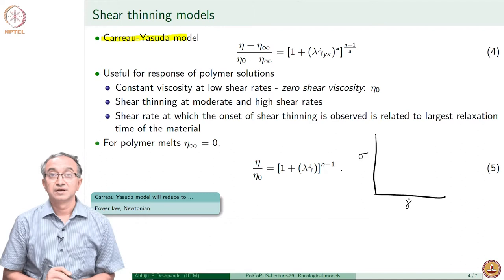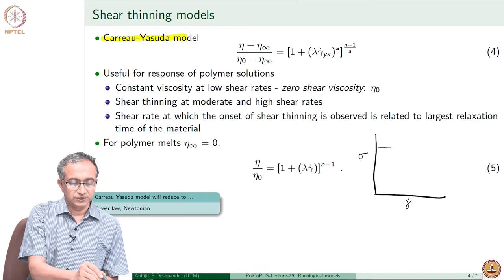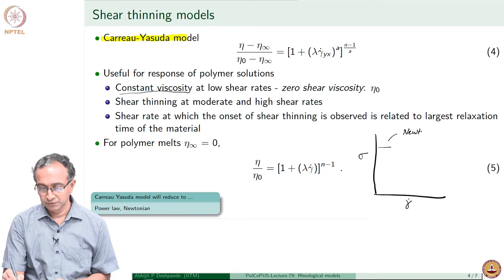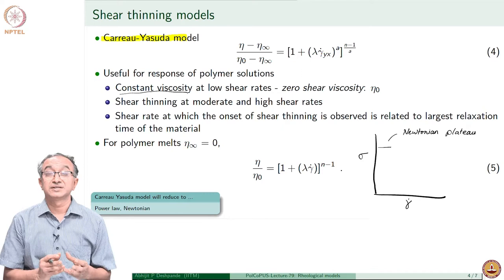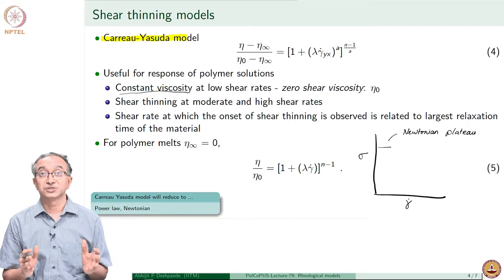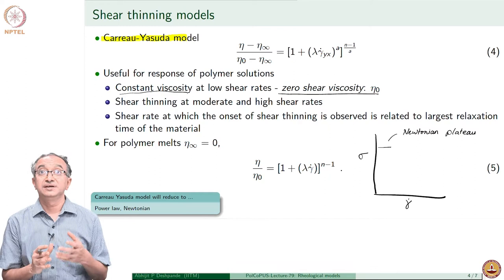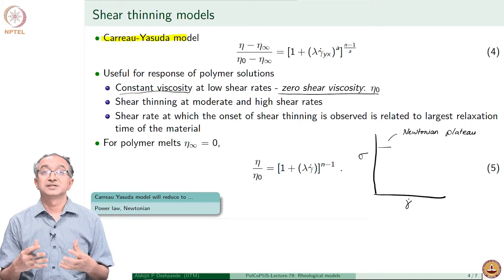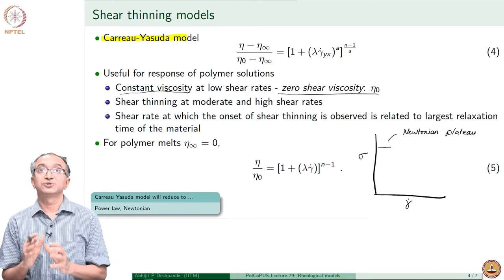If strain rate is low, viscosity is constant — this is called the Newtonian plateau, where viscosity is constant. If we subject a polymeric melt to very low strain rate, it behaves like a Newtonian fluid. This is also called the zero shear viscosity. Zero shear viscosity is a very important determinant in terms of what the entanglement in the material is, what the molar mass of the material is, and what temperature we are at. Looking at zero shear viscosity gives us important clues about the structure of the polymer.